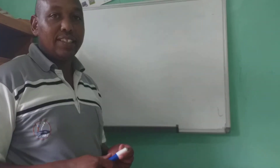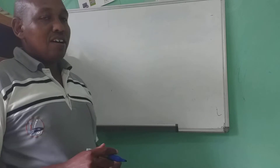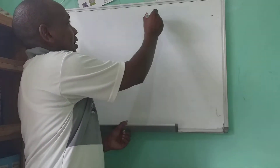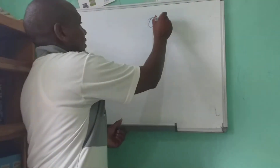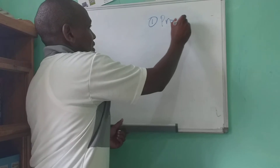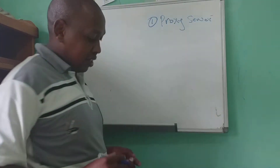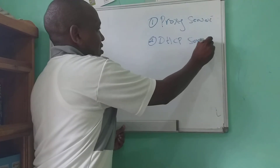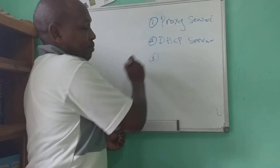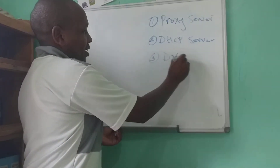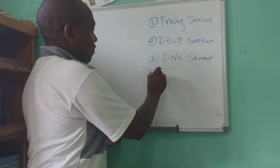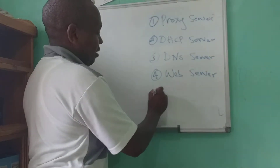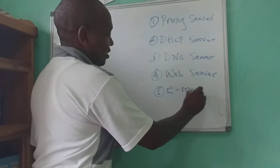In today's lesson we are going to discuss five main critical servers in a local area network: number one is the proxy server, number two is the DHCP server, number three is a DNS server, number four is the web server, and number five is the email server.